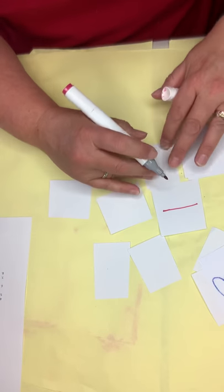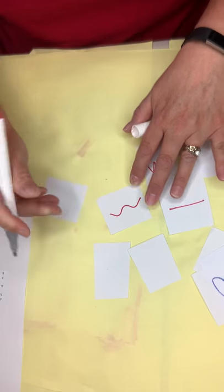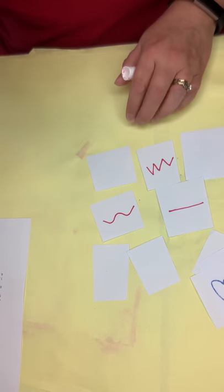So on this pile I'm making different types of lines. It could be straight, it could be zigzag. Even within those lines there's so many options. A zigzag line could look more like a lightning bolt.